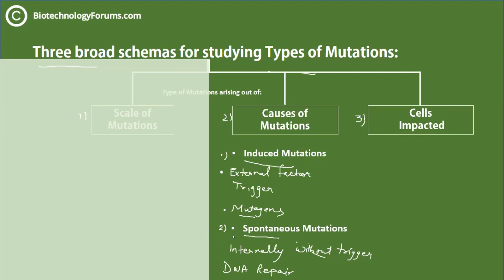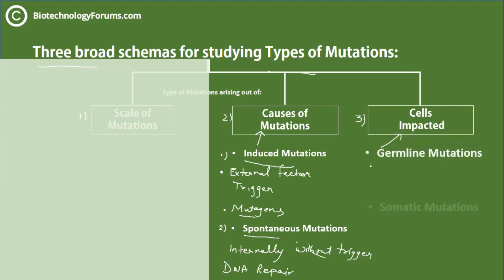So we have covered two types of mutations based on the causes of mutations: induced and spontaneous. Now, what are the types of mutations based upon the cells impacted? Those are germline mutations and somatic mutations.